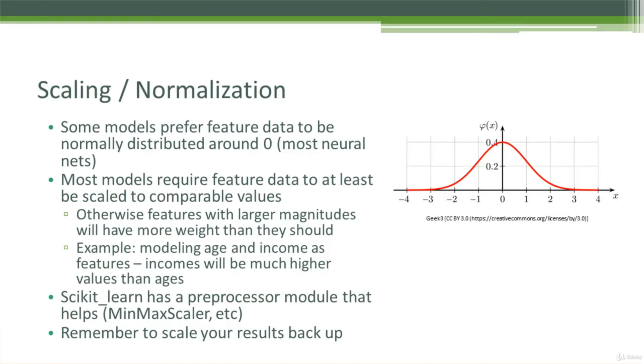We can also talk about scaling and normalizing your data. Again, pretty much every model requires this as well. A lot of models prefer their feature data to be normally distributed around zero. And this is also true of most deep learning in neural networks. And at a minimum, most models will require that your feature data is at least scaled to comparable values.